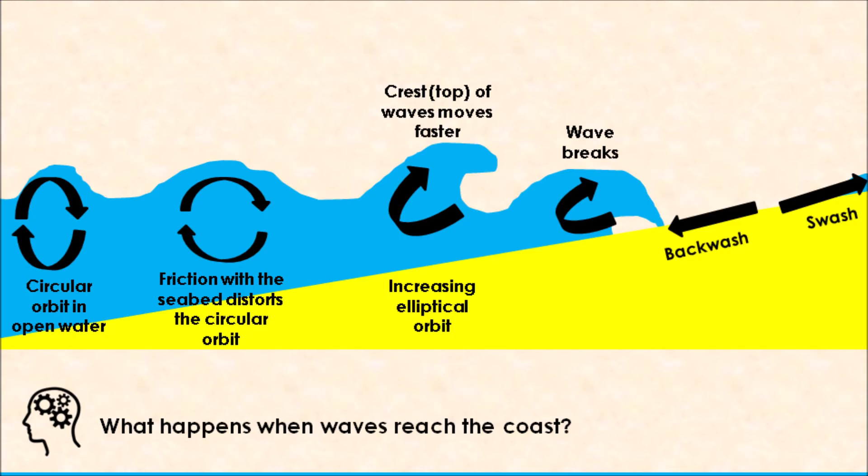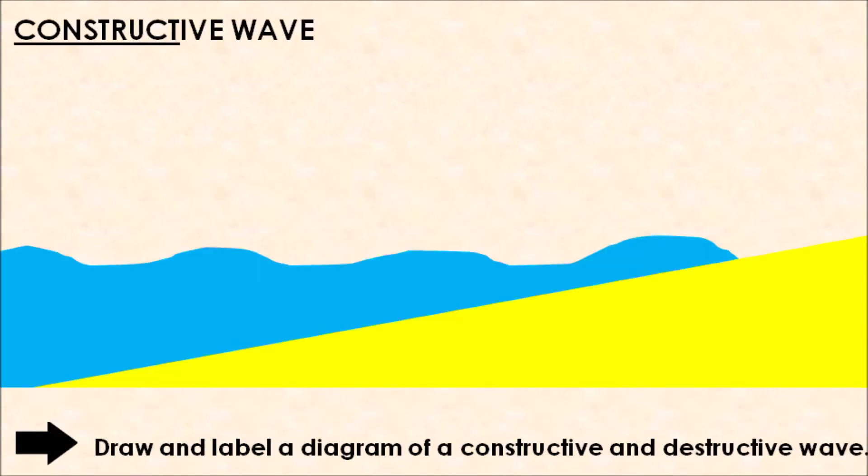When it comes to coastlines, there are two different types of waves: a constructive wave and a destructive wave. Both of these waves can influence the shape of the coastline in very different ways. We're going to start off looking at a constructive wave. If we break this word down, a constructive wave constructs the beach. These waves are responsible for building up those lovely sandy or shingle beaches.